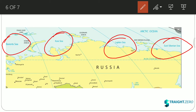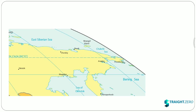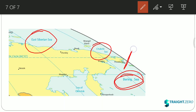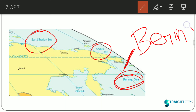Remember: do not confuse Barents Sea with Bering Sea — they are different. Continuing east, after East Siberian Sea, we have Chukchi Sea on the easternmost side — all of these seas border Russia. Finally, we have Bering Sea, and nearby is the Bering Strait (B-E-R-I-N-G), which is an important strait between Russia and the USA.